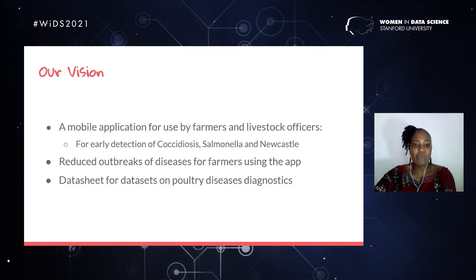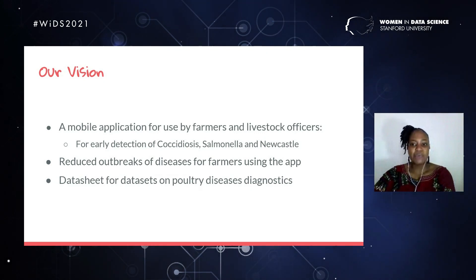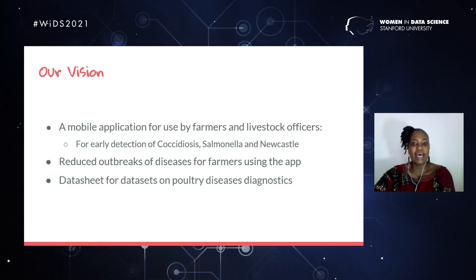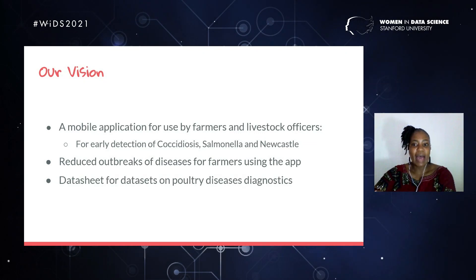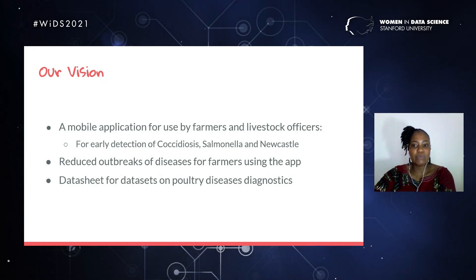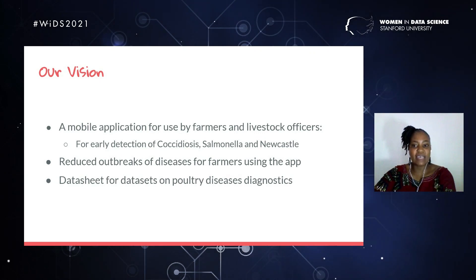Our vision is to have a mobile app for early detection of coccidiosis, Salmonella, and Newcastle poultry diseases, so that farmers and livestock officers using our app will have reduced outbreaks of these diseases at their farms. We are in the final stages of finalizing the data sheets for the dataset we currently have available.